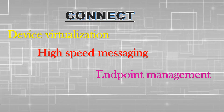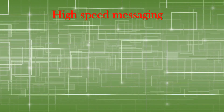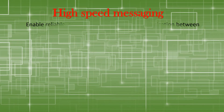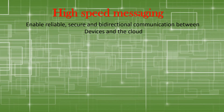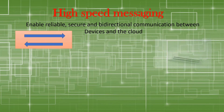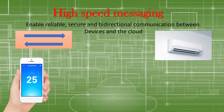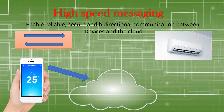Now let's go into high speed messaging. This enables reliable, secure, and bi-directional communication between the devices and the cloud. As an example, if I switch on or switch off my AC using my smartphone, this basically explains that the AC and my smartphone are connected to a specific platform, and that's how both devices interact with each other. That's the reason why we say that this system is bi-directional.